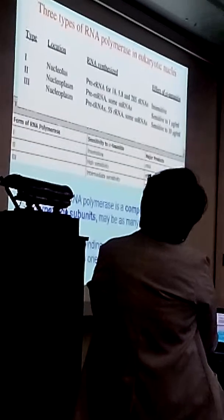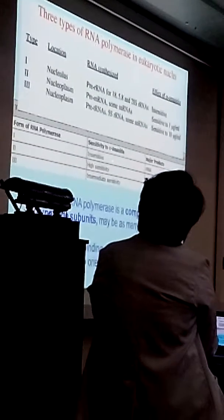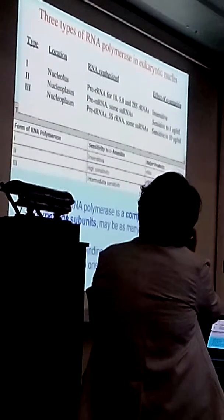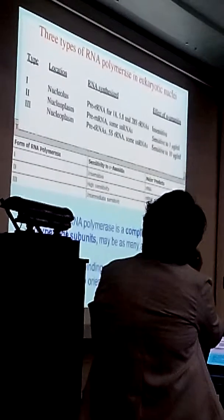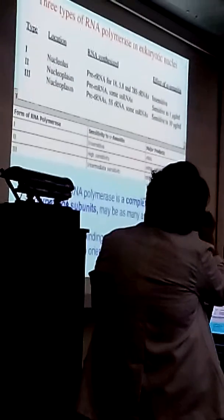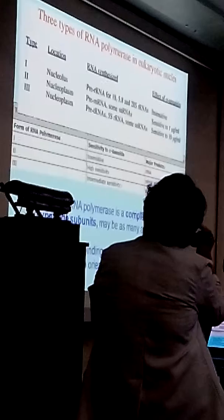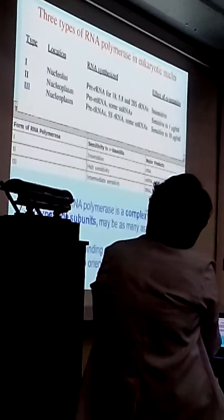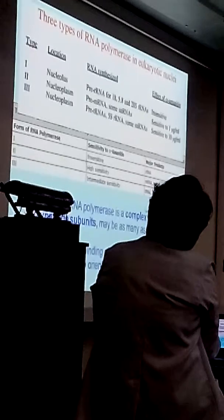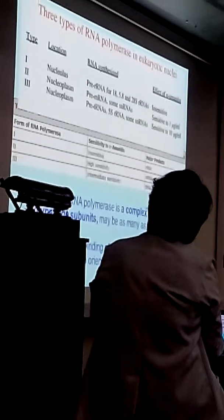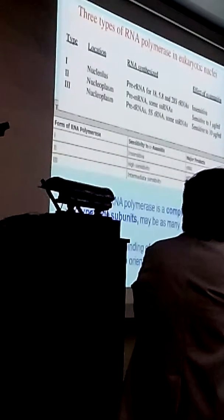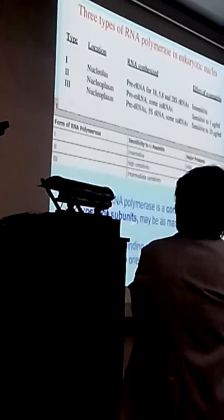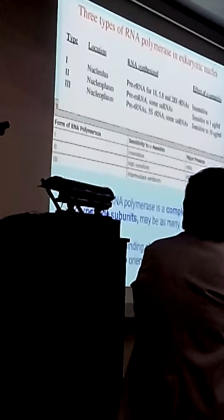They are differentiated from each other by their sensitivity to alpha-amanitin. One is insensitive, two is highly sensitive, three is intermediate. So each type of RNA polymerase is a complex of many polypeptide subunits, as many as 14.